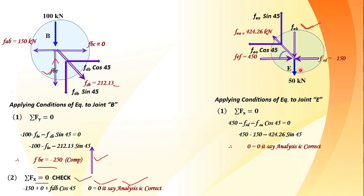Summary of the method of joints procedure: Step 1 — determine the type of truss using m = 2j - 3. Step 2 — find geometrical parameters (angles and lengths). Step 3 — identify a joint with only two unknowns, since each joint forms a concurrent force system allowing only sigma Fx and sigma Fy conditions.